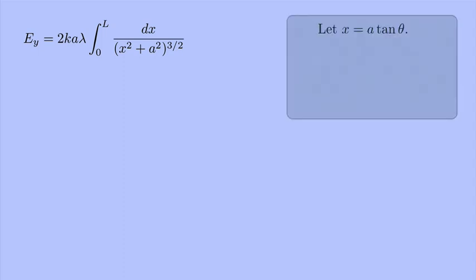So if we let x equal a tan theta, and this is something that you would learn in calculus. There's different substitutions for different types of integrals. This x squared plus a squared, x equals a tan theta is a good substitution to use. So if we let x equal a tan theta, then dx is a secant squared theta d theta. I'm just taking the derivative of tan theta to get secant squared theta.